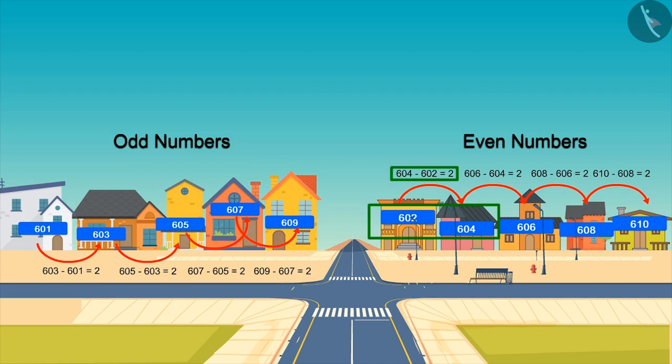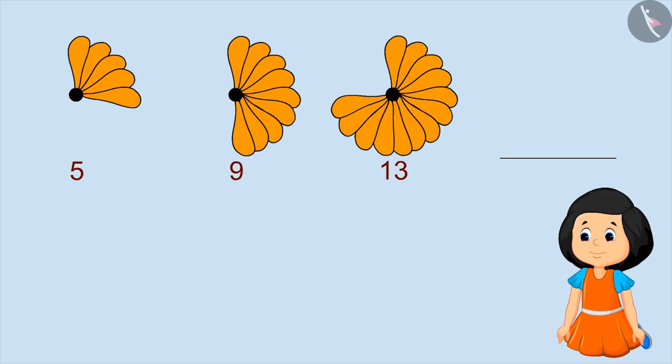Look what Muni is making. It seems today she is making a paper flower. She applied five petals in the first round of the flower, then nine, then 13. Can you tell how many petals Muni will put in the next round? Children, you can pause the video to find out the number.